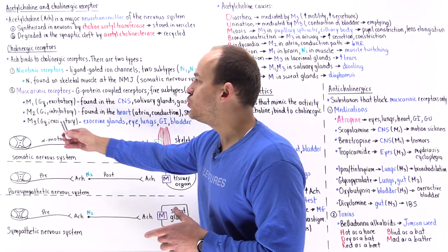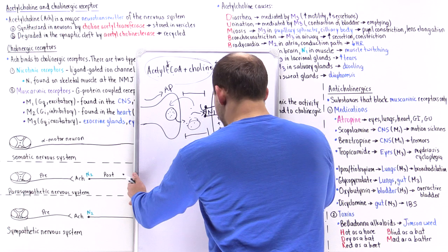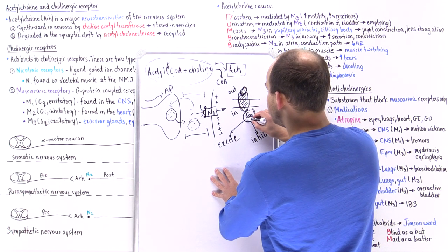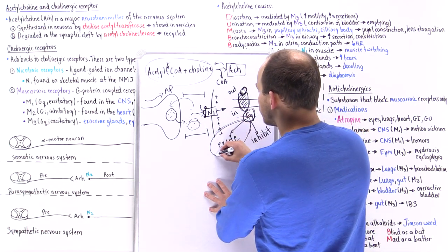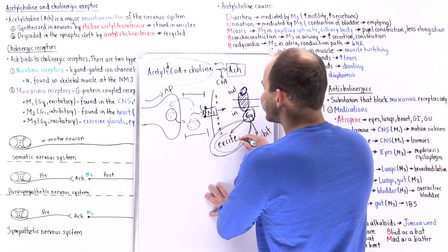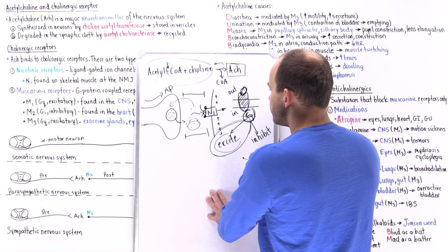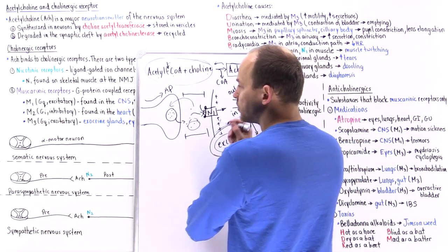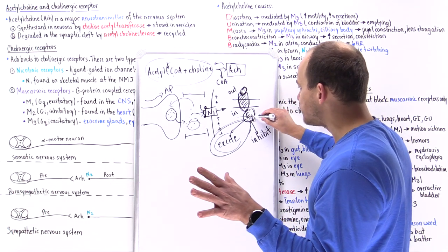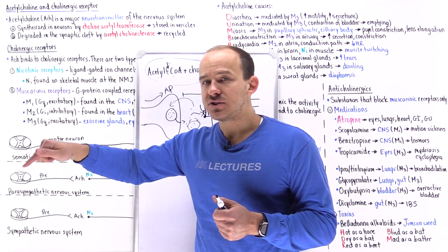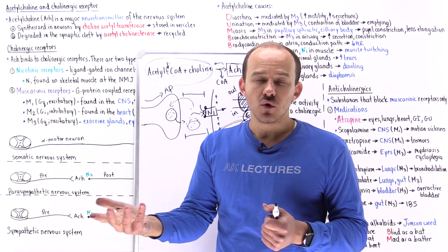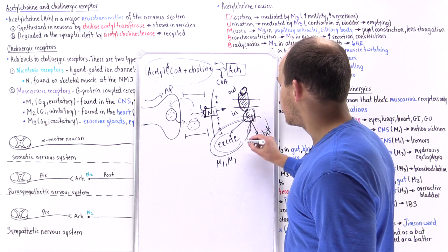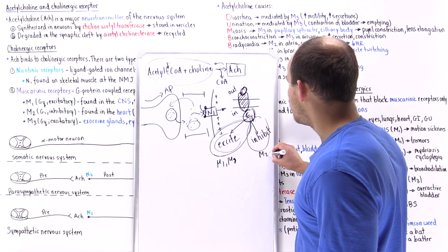M1 and M3 use the GQ pathway. When acetylcholine binds, it activates GQ, which excites the cell — increasing production of secondary messenger molecules, increasing the activity of whatever the effector cell is. In contrast, M2 uses a GI protein, which is inhibitory in nature. It decreases production of secondary messengers. More specifically, GI inhibits adenylate cyclase, decreasing production of cyclic AMP, thereby inhibiting the cell. So M1 and M3 follow the excitatory pathway, and M2 follows the inhibitory pathway.